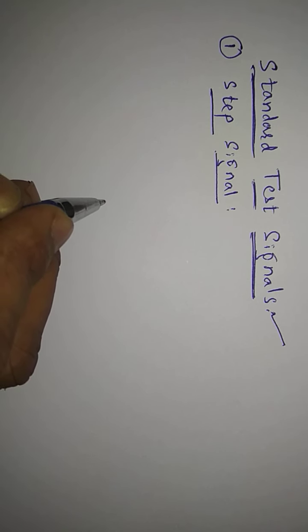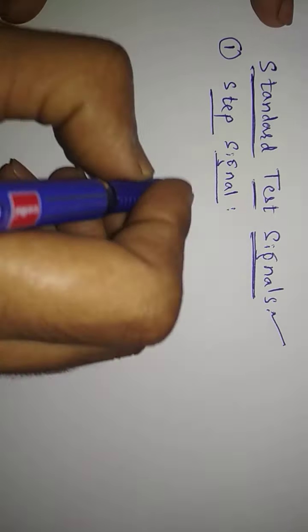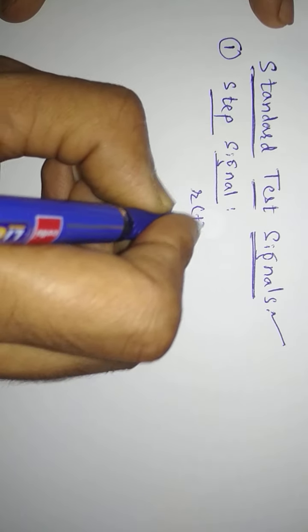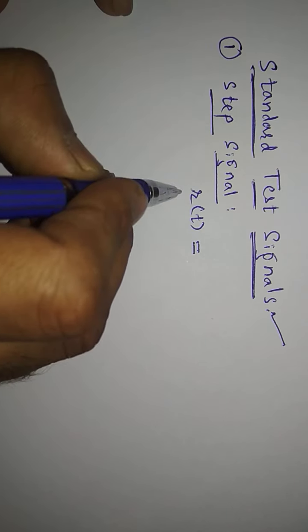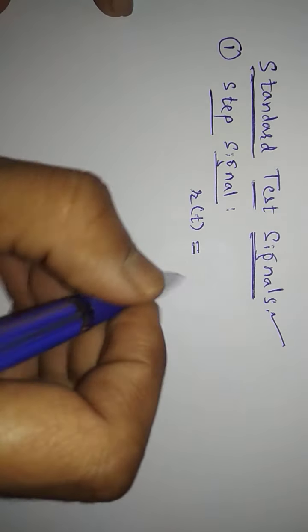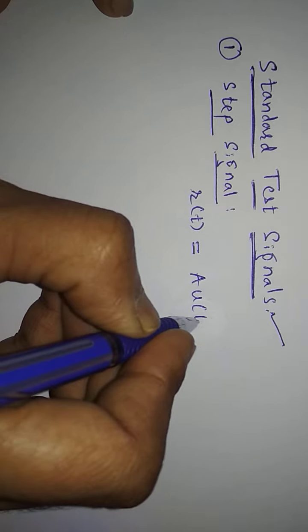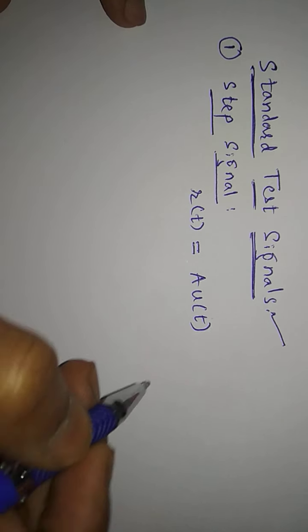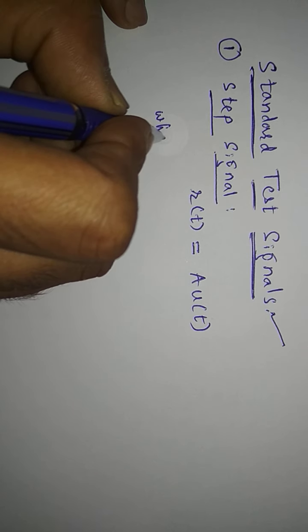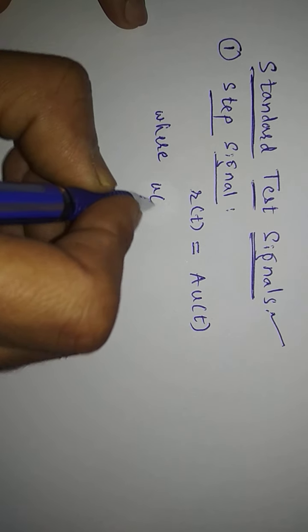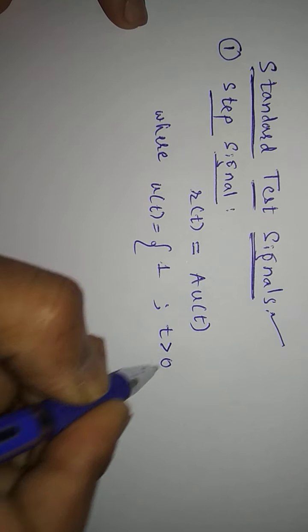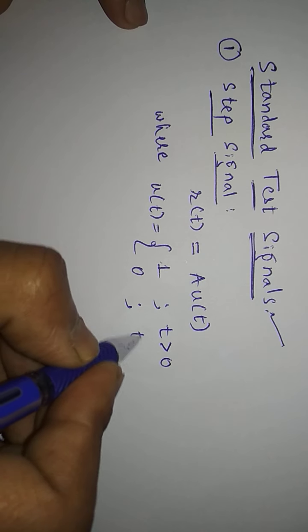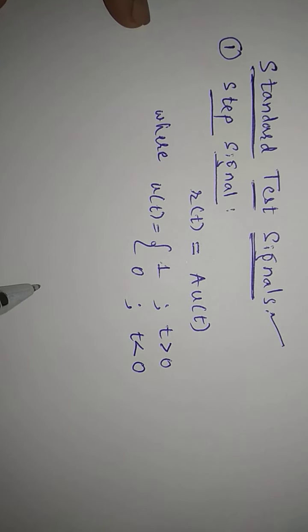The step signal is a signal whose value changes from one level to another level in zero time. If I want to write the mathematical expression, I write it as r(t). All standard test signals are defined using the symbol r(t). So r(t) is equal to A into u(t), where u(t) is the step signal. u(t) is defined as: u(t) = 1 for t greater than zero, and u(t) = 0 for t less than zero.